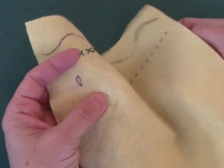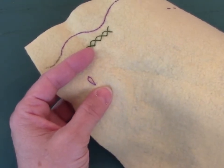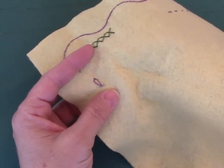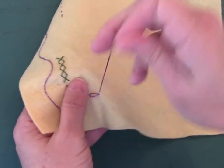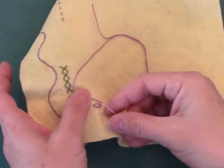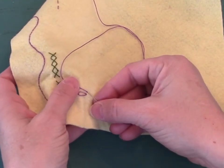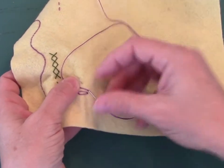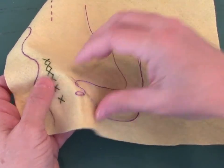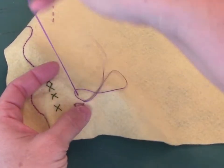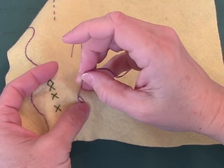Lazy daisies are good for flower petals, they're good for small leaves. So if I want to make a flower I would come up again down here towards the center, and back down really close to where I came up. I'm sliding my needle under the fabric to however long I want that petal to be. Make sure your thread is under the needle. Pull it up until you're happy with your loop, and tack it down.